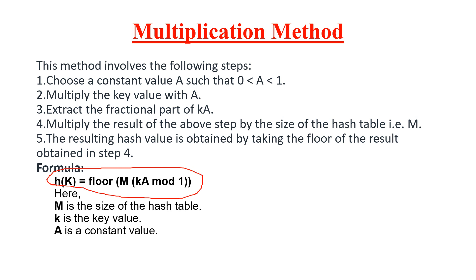So, first we take the constant value A, with range 0 to 1. Second step: multiply with the key element. Third step: mod with 1 to extract the fractional part. Fourth step: multiply with the table size M, which is the hash table size. Fifth step: take the floor value. That result becomes the index to store an element in the hash table.